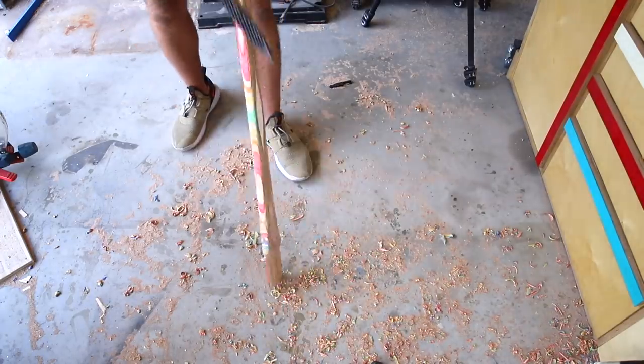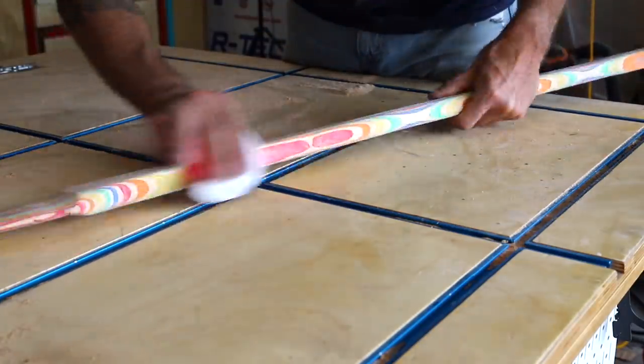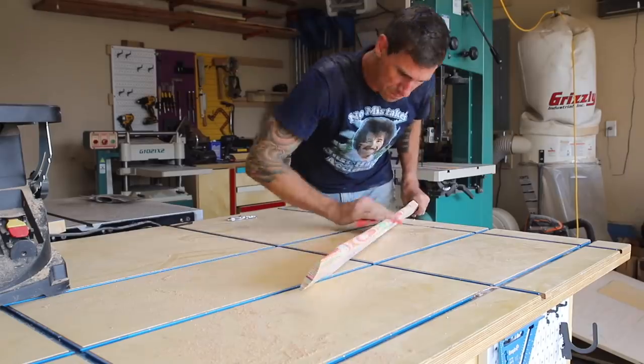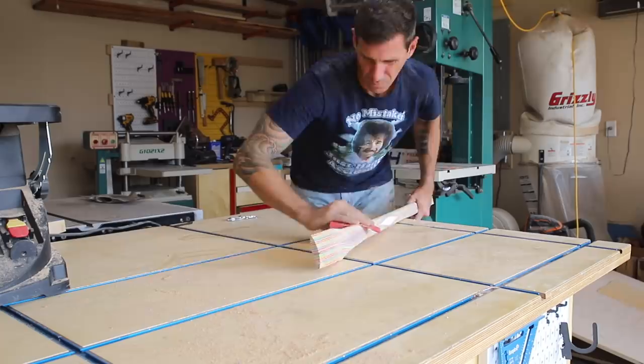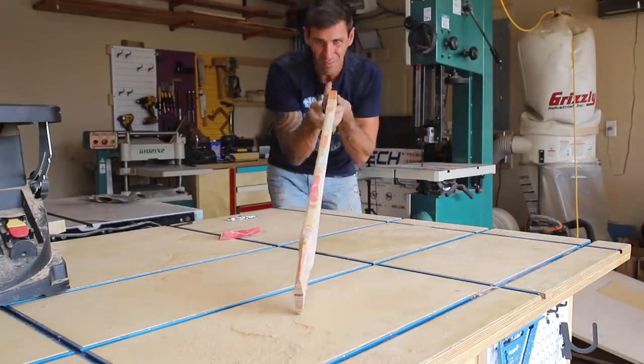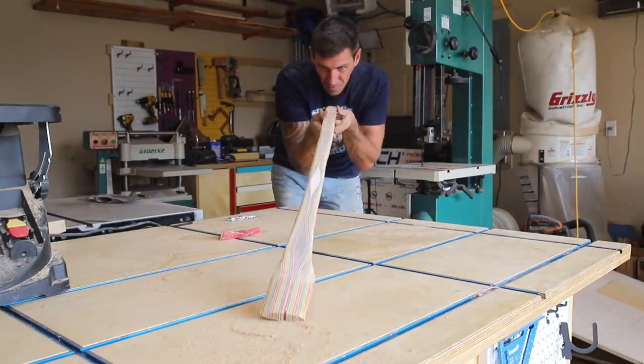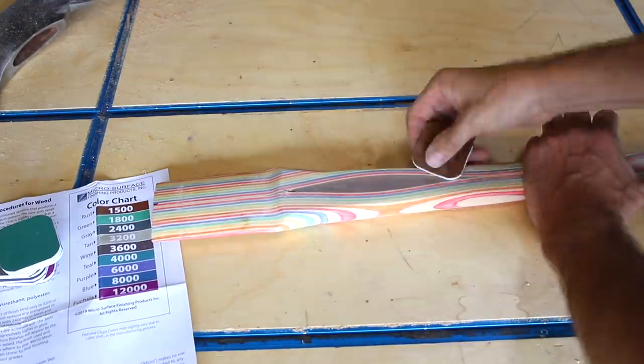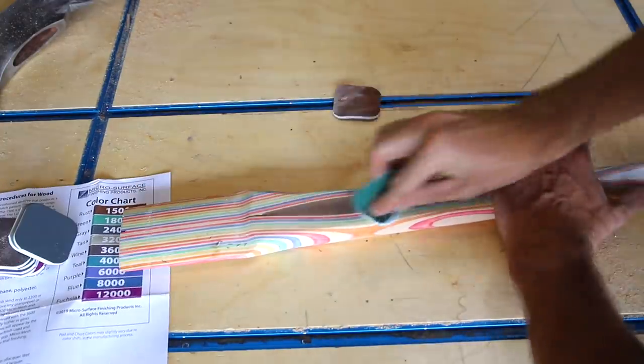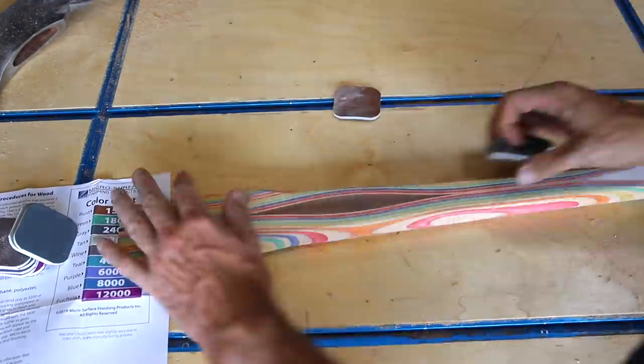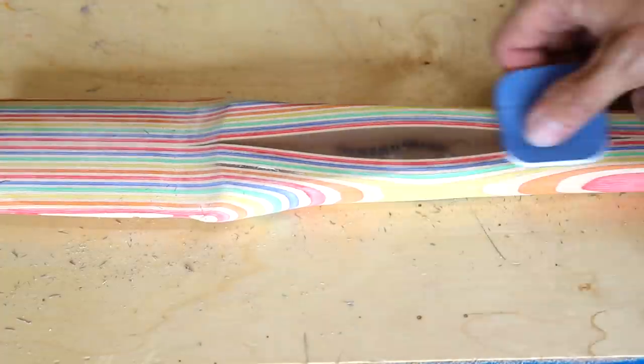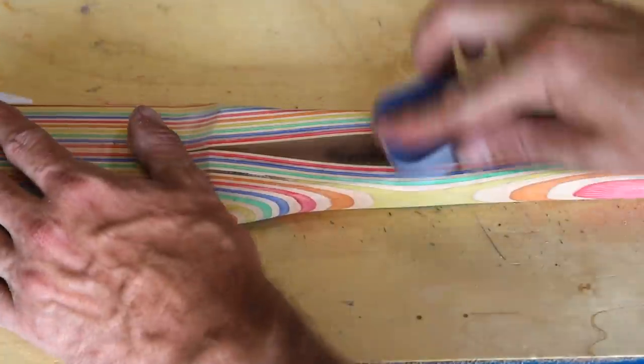I finish shaping the remainder of the handle with a rasp and a lot of hand sanding. I found these micro mesh sanding pads to sand the epoxy smooth and these go all the way up to 12,000 grit which creates a glass like polish.